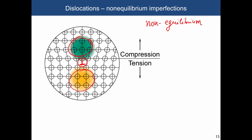There is strain associated with the presence of a dislocation. In general, the elastic energy is proportional to the Burgers vector squared. If you have a dislocation with two extra planes, the Burgers vector will be twice as large, and the stored elastic energy will be four times larger than for a dislocation with only one set of planes.